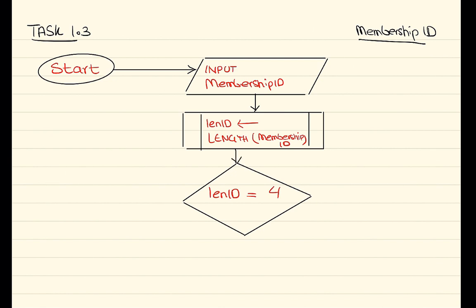So if it is not equal to 4, we have to take the input again. And if it's true, we'll end the program. So 'Stop' when it's true, and when it's false, take the input again.